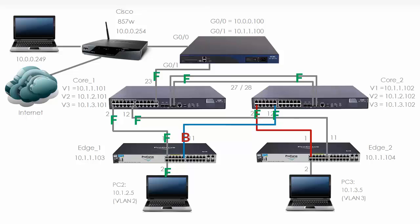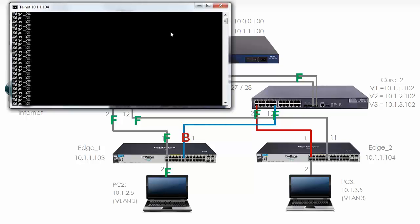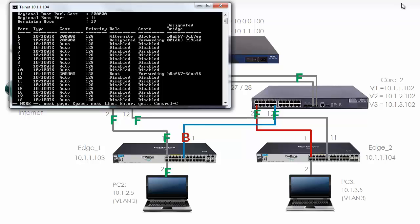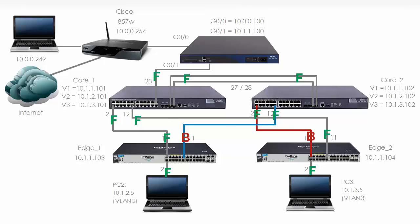Let's look at Edge 2 and see which ports are forwarding and blocking. 'show spanning tree instance 1' — port 1 is blocking, but ports 2 and 11 are forwarding. That's what the topology looks like for Instance 1 — a lot better than previously. For example, if PC2 was sending traffic to a server on Core 1, it would send traffic directly via Edge 1 to Core 1. If PC3 was sending traffic to a server on Core 1, the traffic would go directly via Edge 2 to Core 1. Very efficient.